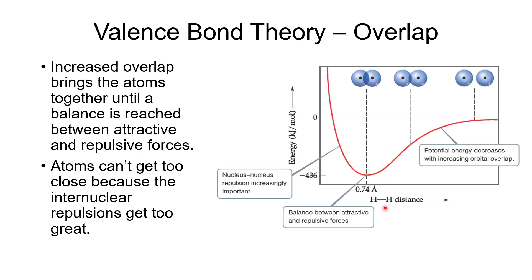This diagram is for hydrogen. Two pieces of information can be extracted: the bond energy, which is the difference between zero energy and the bottom of the curve — in this case negative 436 kilojoules per mole, meaning the bond energy is positive 436 kilojoules per mole — and the bond distance, which is the distance to the minimum shown by the dotted line. Molecules vibrate back and forth over that distance, so on average they are at that bond distance.